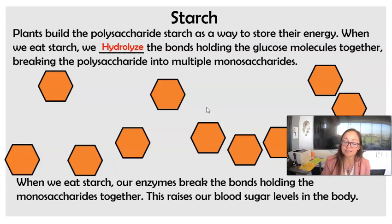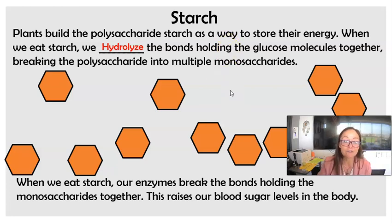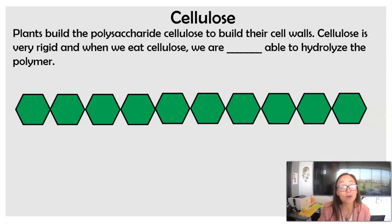So when we eat starch, our enzymes break the bonds holding the monosaccharides together. And this raises our blood sugar levels in our body. Now for cellulose though, cellulose is also a polysaccharide made of glucose monomers or a chain of monosaccharides. So it is a polymer.